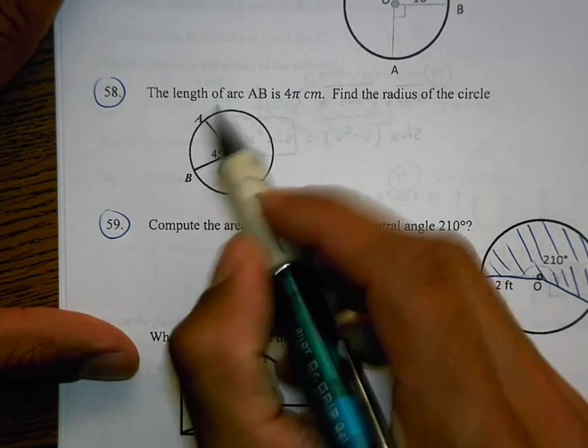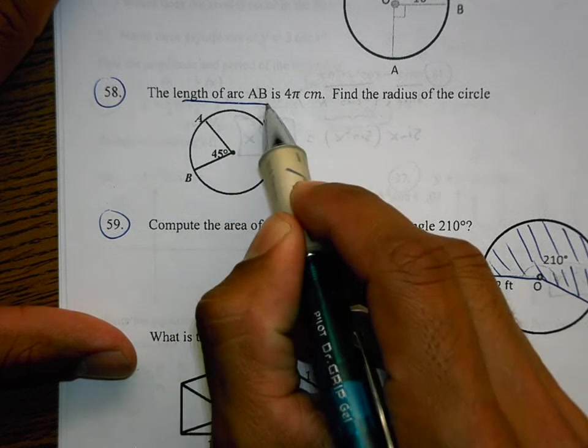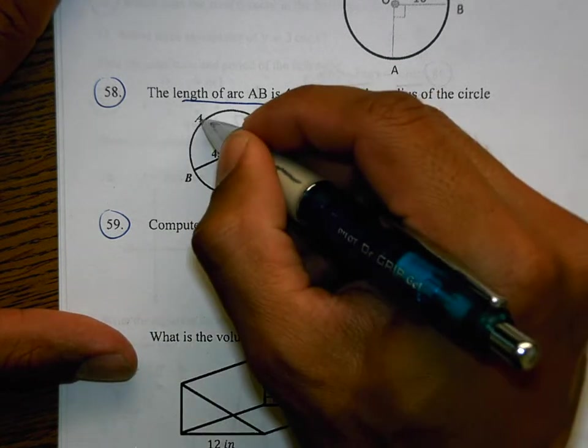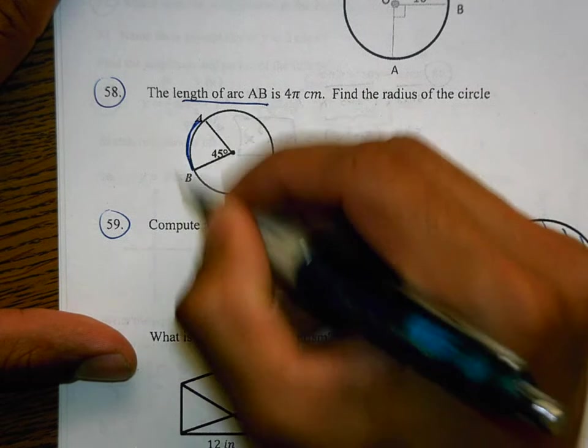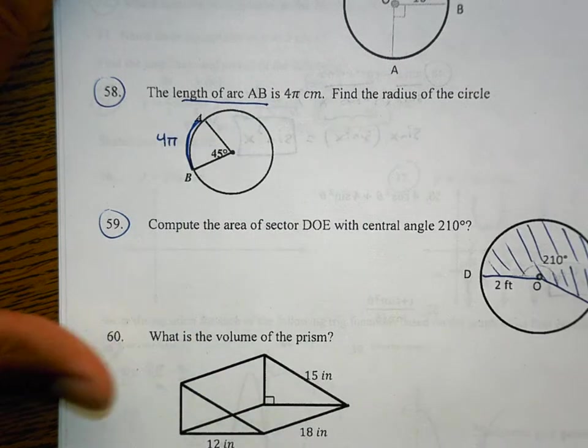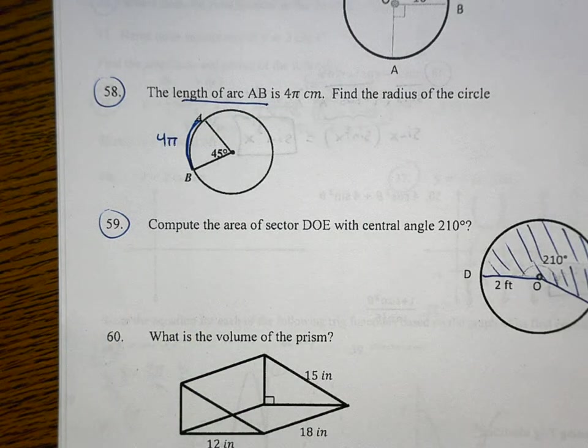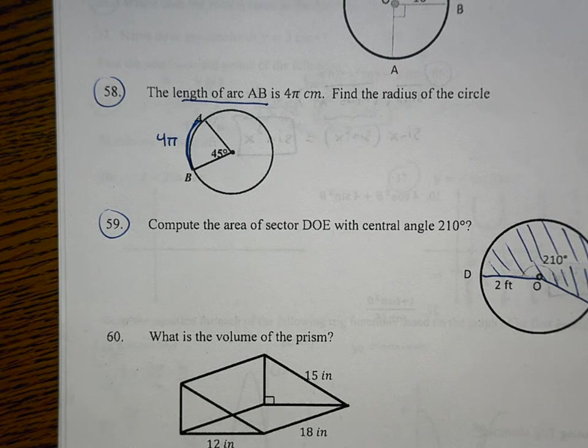I don't see them on here, so I picked 58 and 59 and then some from the other side as well. First off, the length of arc AB is 4π. What that means is that the distance around this arc is 4π centimeters long. That's what arc length is. Some people forgot arc length.